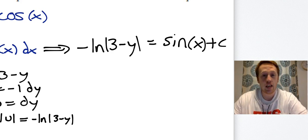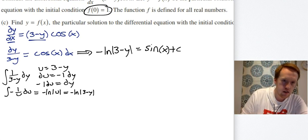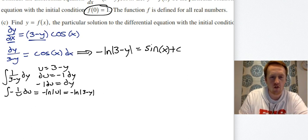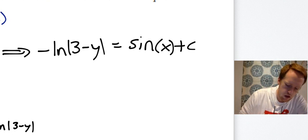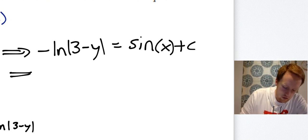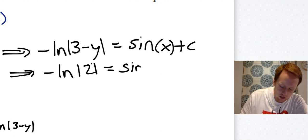Okay. Now I need to figure out what c is. So the way I figure out what c is, is I take this and I plug that into what I have so far. So x is zero, y is one. So -ln(3 - 1) = -ln(2) = sin(0) + c.